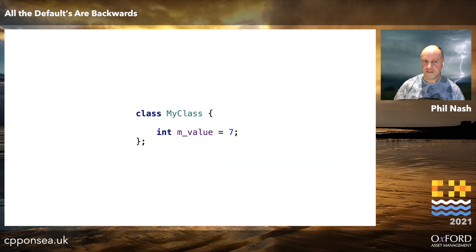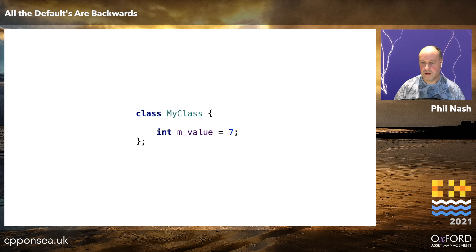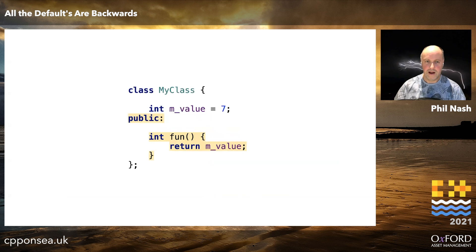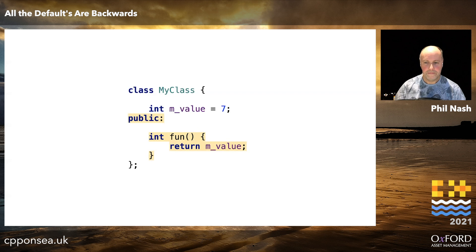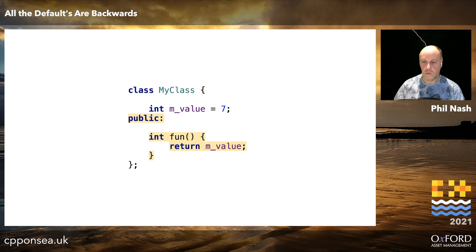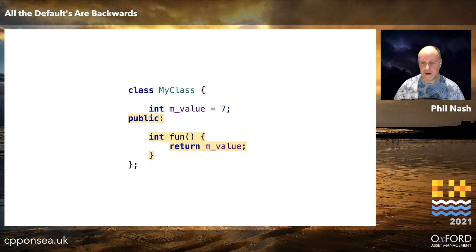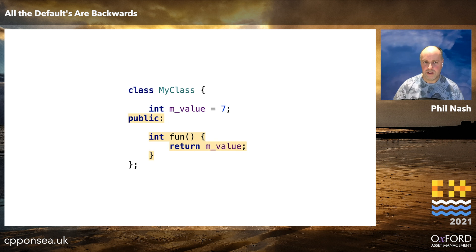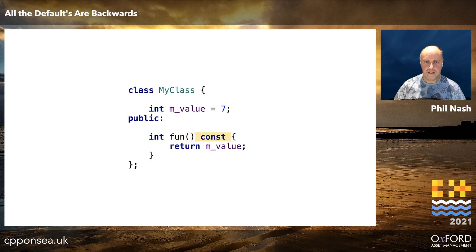To illustrate the point, let's consider a simple class — it just has a member variable, an integer in this case. Imagine you want to add an accessor for it, so we write a public member function just returning that integer. Pretty straightforward — this is basically C++ class building 101. Except we wouldn't generally write it quite like this. For a start, it's an accessor — it's just going to be reading the data, not writing to it — so we should make that const.